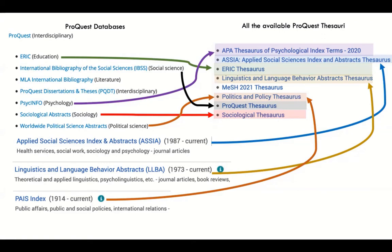Why doesn't MESH have an arrow? We no longer have Medline in ProQuest — we used to, but it was too clunky. Now the only way to get to Medline is through Ovid. We also have PubMed, the free version, enriched by direct links to University of Toronto resources. PubMed is amazing.